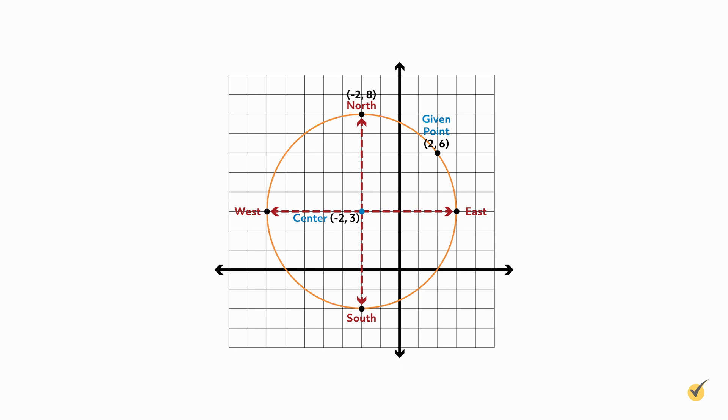Going north 5 units, we found (-2, 8). Going west, we found (-7, 3). Going south, we found (-2, -2). And going east, we found (3, 3). Four points. One more than the problem asked us to find.